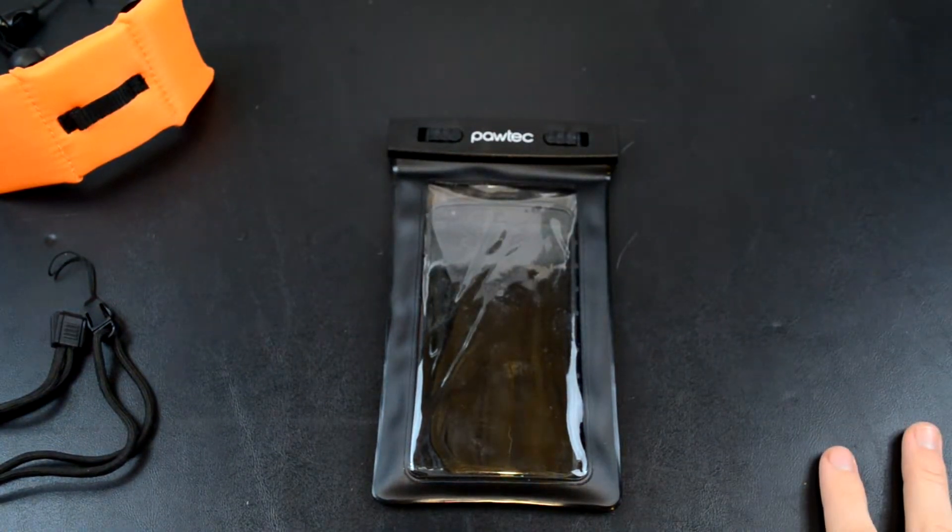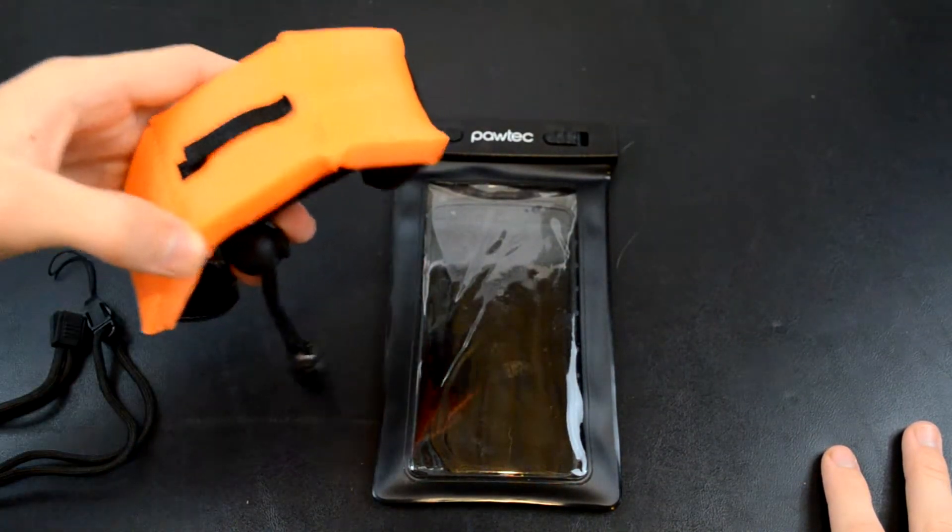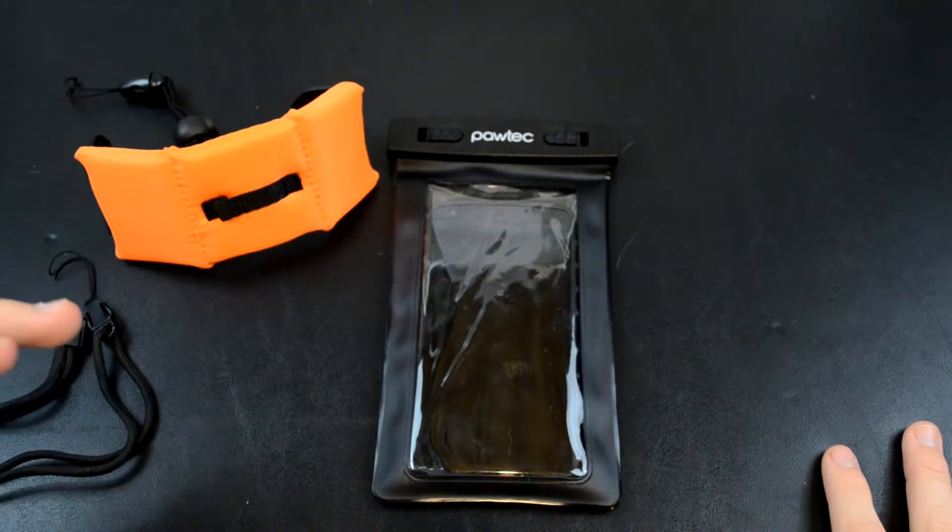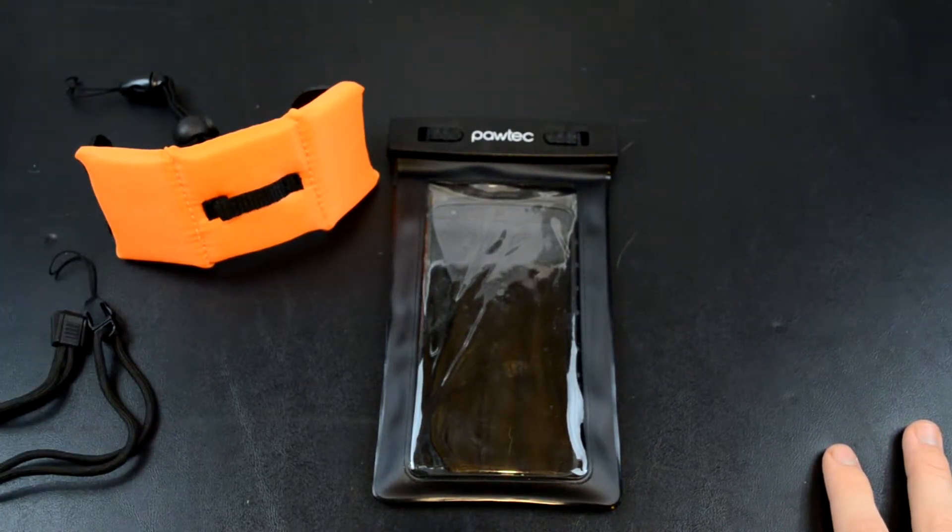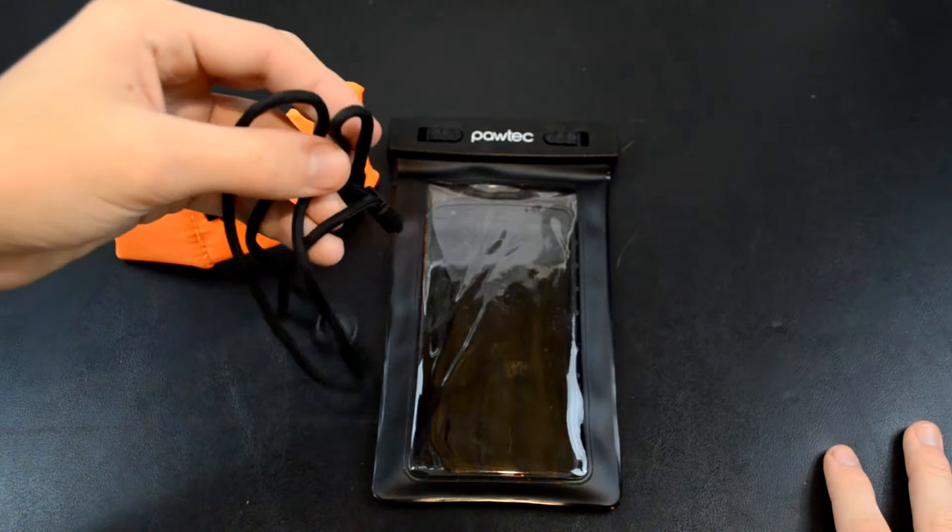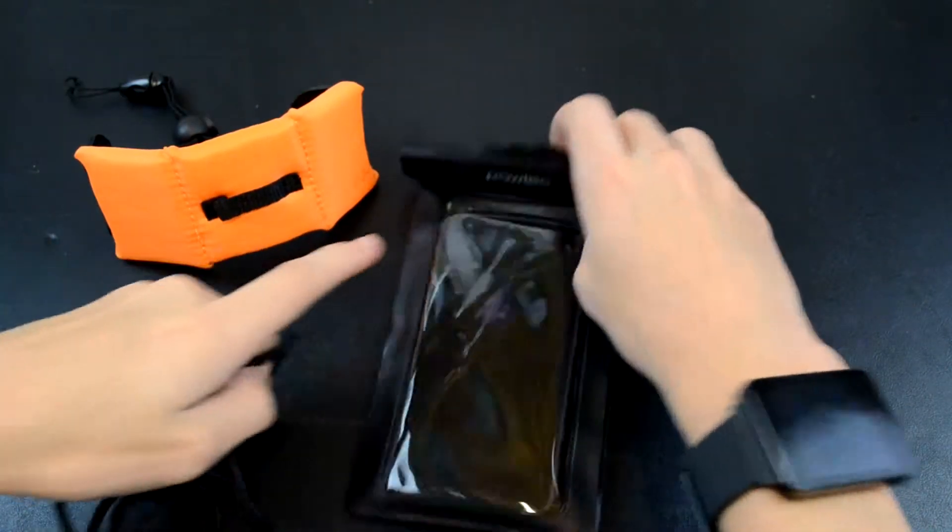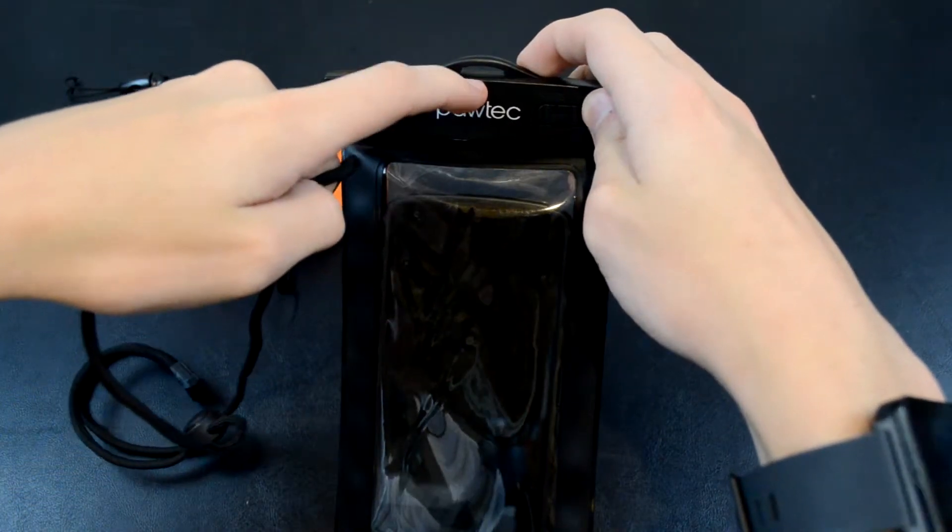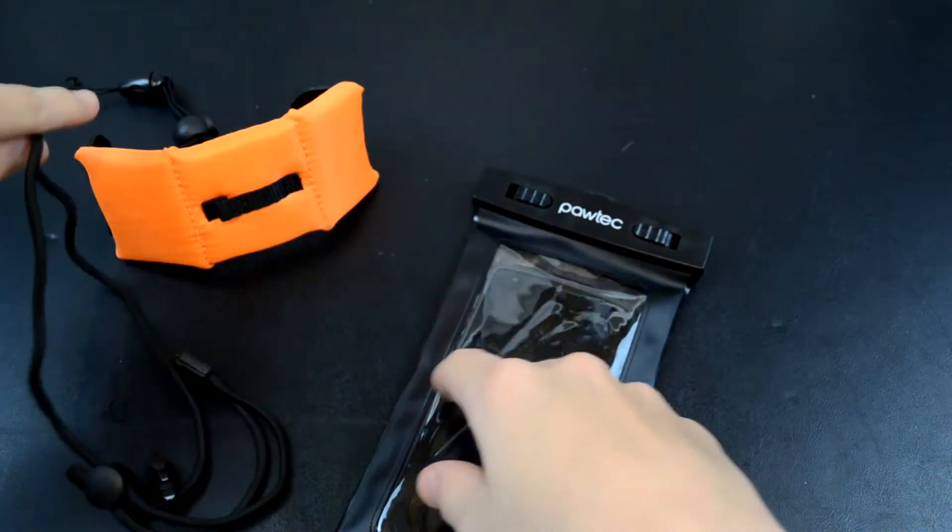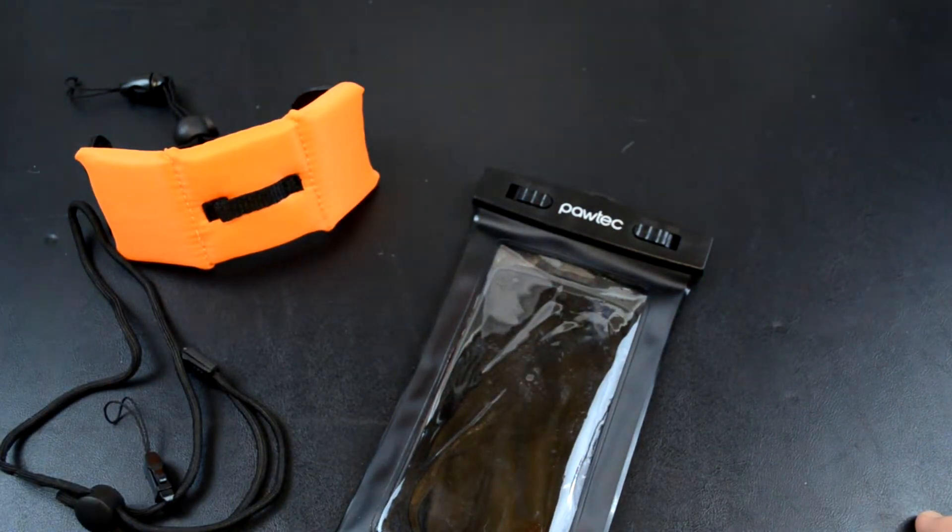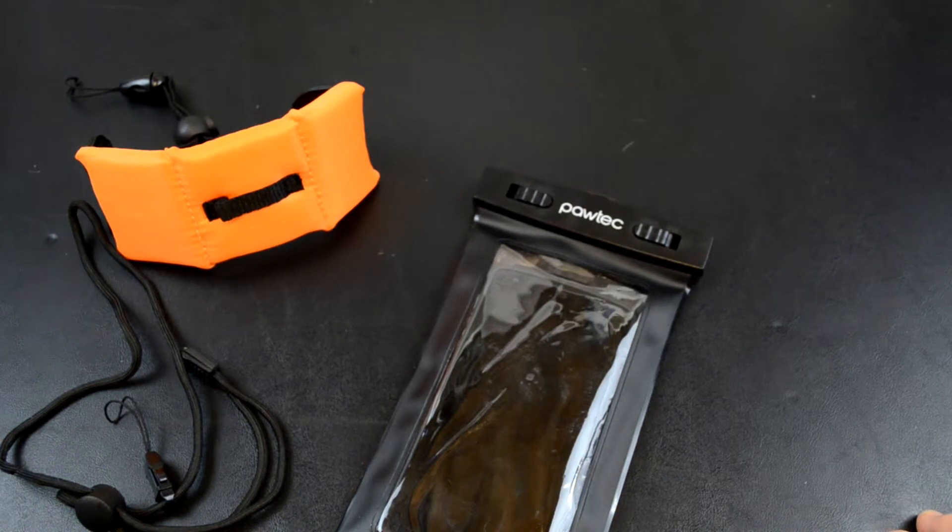It's waterproof up to 10 meters. Attach this floater so if you drop it, it's not gonna sink, it's just gonna float up. Then attach the lanyard. Both of these attach to the top ring part here. Just attach both of these and then your device will be secure whether you're swimming at a lake, in a river, or just in your shower.